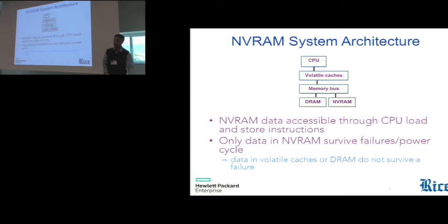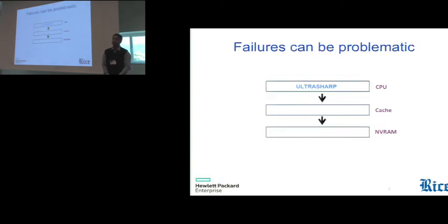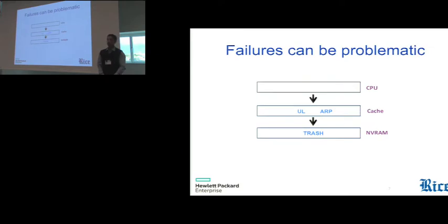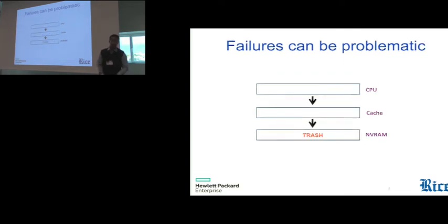So this poses a bit of a problem, as we'll see in this next example. Imagine that we are trying to store this word UltraSARP in NVRAM. And through program execution, it finally makes it to cache. And imagine that this word spans multiple cache lines. And some of these cache lines would eventually make it to NVRAM due to eviction. And while other cache lines are still in volatile structure, a crash happens wiping our cache. And all we end up in NVRAM is trash instead of the word UltraSARP. Clearly not the desired result.